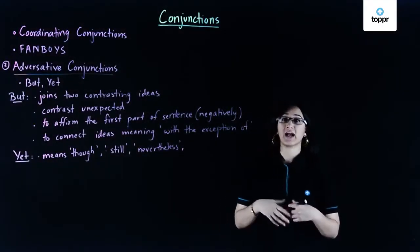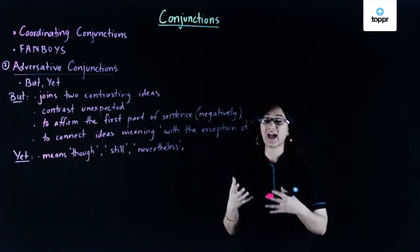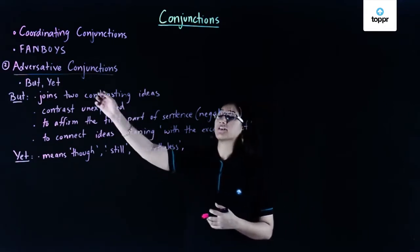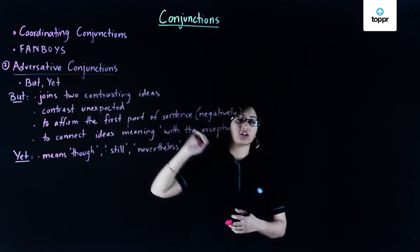Now we'll be looking at the next type of coordinating conjunctions that we have and they are called adversative conjunctions. Now what exactly are adversative conjunctions?